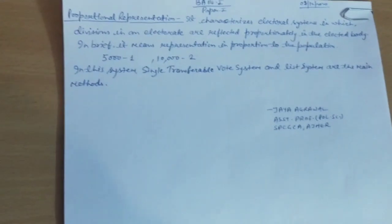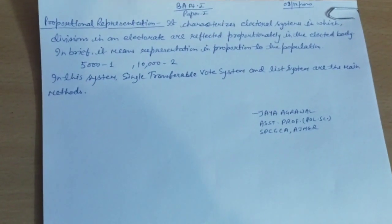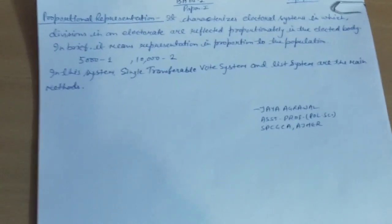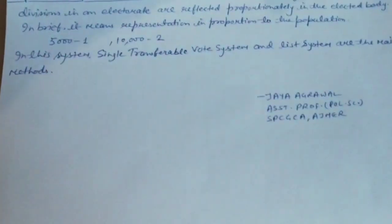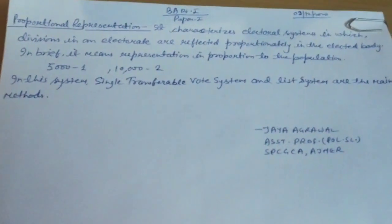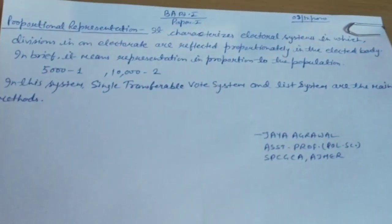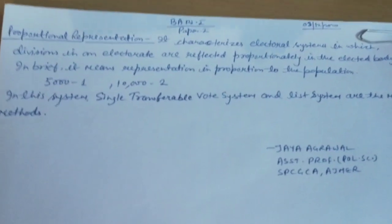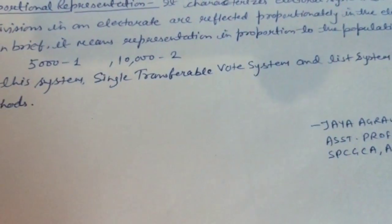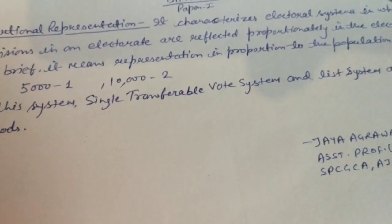In this system, the Single Transferable Vote system and the List System are the two main methods. We will understand what is the meaning of the Single Transferable Vote system and how it works, and then we will look at the List System. Both are methods of proportional representation.